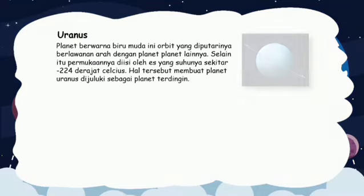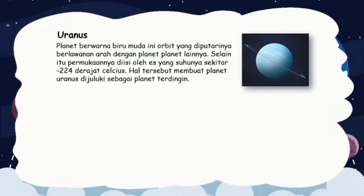7. Uranus. Planet berwarna biru muda ini memiliki orbit yang diputarinya berlawanan arah dengan planet-planet lainnya. Selain itu, permukaannya diisi oleh es yang suhunya sekitar minus 224 derajat Celsius. Hal tersebut membuat planet Uranus dijuluki sebagai planet terdingin.